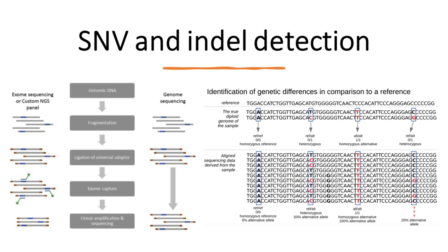In whole exome sequencing, differences in the hybridization efficiency of sequence capture probes — possibly attributable to GC content variation — can result in target regions that have little or no coverage. Uniformity of coverage is also influenced by repetitive or low-complexity sequences, which either restrict bait design or lead to off-target capture. Furthermore, unlike WGS, WES still routinely uses PCR amplification, which must be carefully optimized to reduce GC bias.